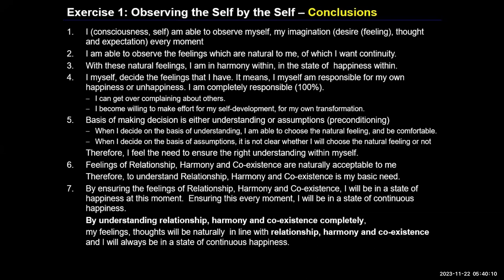We kept observing through our awareness, from the place of the observer — pure observer. And we found that these feelings are decided by our sanskar, which is another set of feelings, another set of activities. And I, as an observer, can observe this sanskar, this preconditioning, these acceptances which are deciding on this feeling. So now we can see five different types of activity: the pure observer — one; the sanskar — two; the feeling; the thought; and the expectation.